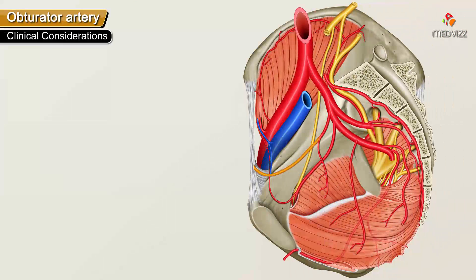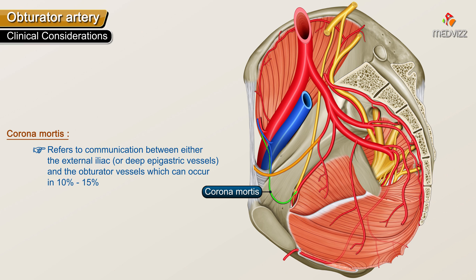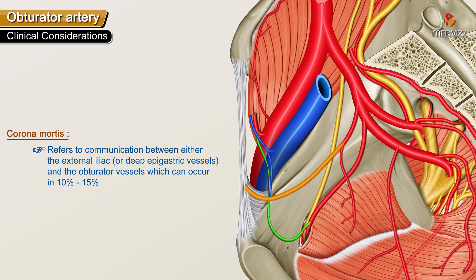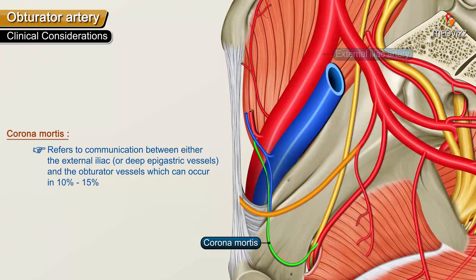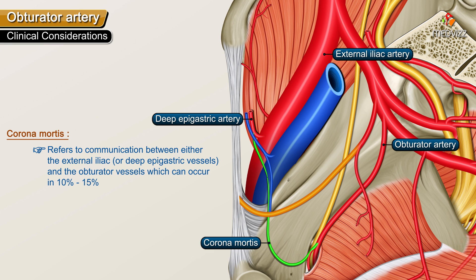Clinical considerations. Corona mortis refers to a communication between either the external iliac or deep epigastric vessels and the obturator vessels, which can occur in 10–15% of cases.